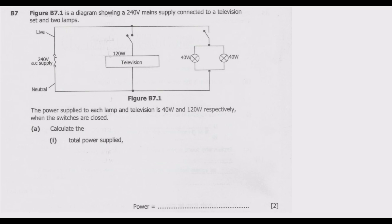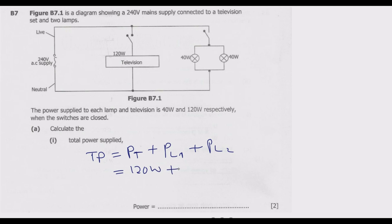To find the total power, we say: total power equals power at the television set plus power of lamp one plus power consumed by lamp two. So the television set is 120 watts, plus the first lamp which is 40 watts, plus the second lamp which is 40 watts. When you add these, you get 200 watts.